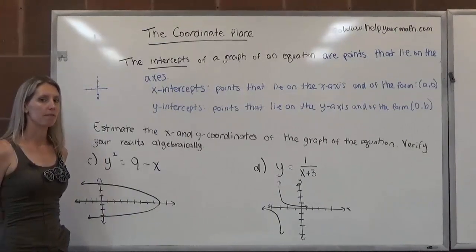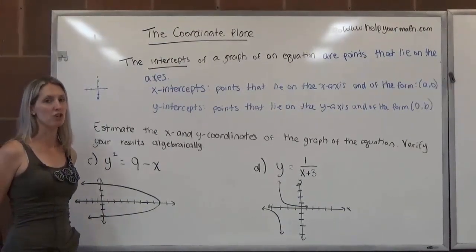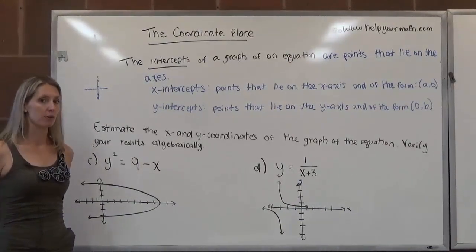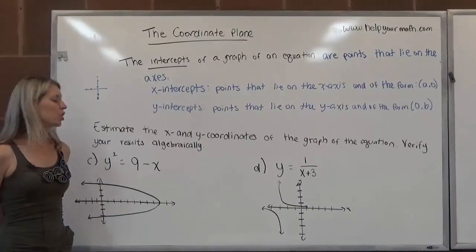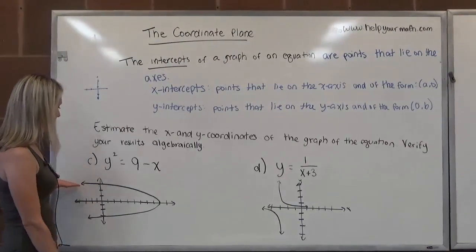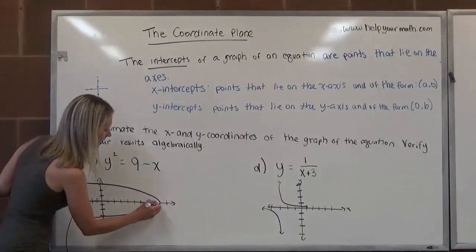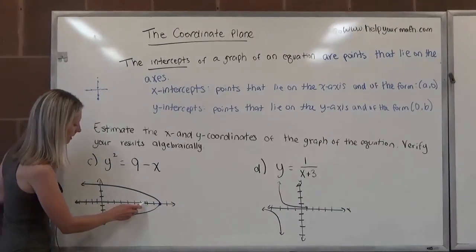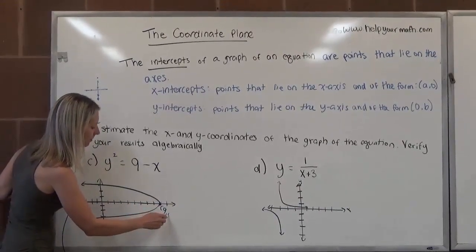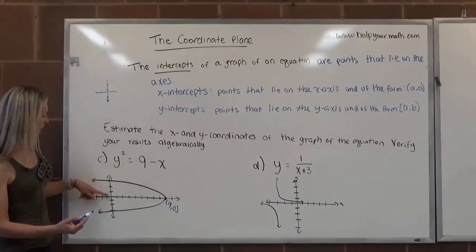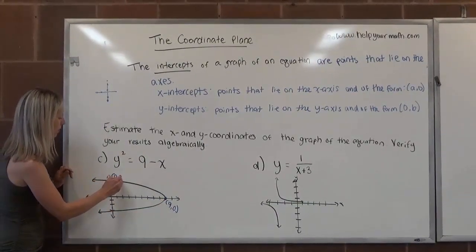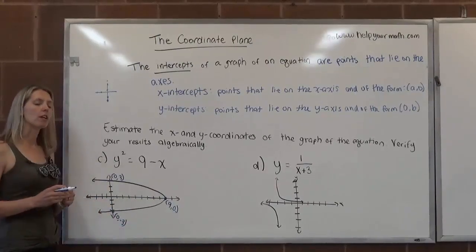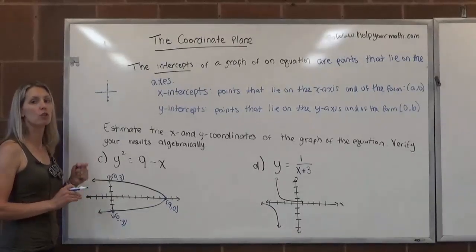Now we're going to look at a few more examples of finding intercepts when given the equation and graph. First we look at the graph to determine the intercepts, then check algebraically. Looking at the first graph here, it looks like we have an x-intercept where it crosses the x-axis at 9 — ordered pair (9, 0). The y-intercepts appear to be at (0, 3) up here and (0, negative 3) down here.